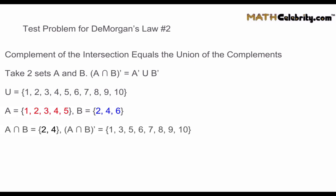A intersection B — everything in A and B — is {2, 4}. The complement of A intersection B is everything in the universal set not in that intersection: {1, 3, 5, 6, 7, 8, 9, 10}.